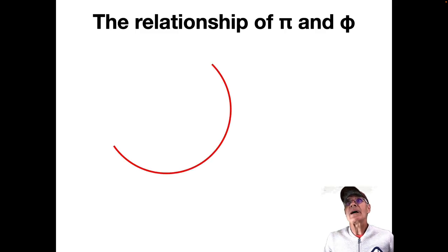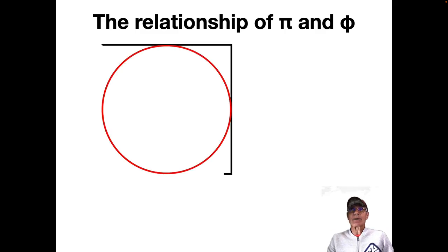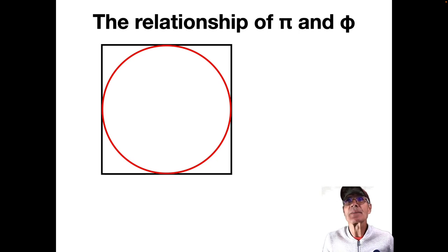So the relationship of Pi and Phi. You take the circle and the square, you know, heaven, the circle, eternity, square is earth, anciently. And it's the circle inscribed within the square, or the square is exoscribed from the circle.